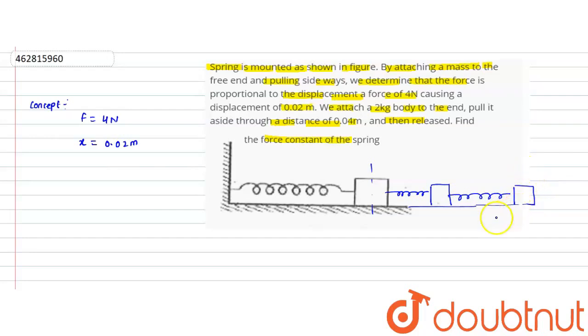The extreme position in this problem is 0.04 meters, and at the mean position, displacement is zero. We know that F equals minus k times x.